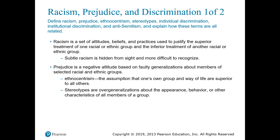Racism is a set of attitudes, beliefs, and practices used to justify the superior treatment of one racial or ethnic group and the inferior treatment of another. In the United States, racism is sometimes referred to as white racism — socially organized attitudes, ideas, and practices that deny people of color the dignity, opportunities, freedoms, and rewards typically available to white Americans. Prejudice is a negative attitude based on faulty generalizations about members of a selected racial or ethnic group. Within prejudice is ethnocentrism, the assumption that one's own group and way of life are superior to all. Stereotypes are overgeneralizations about the appearance, behavior, or other characteristics of all members of a group.